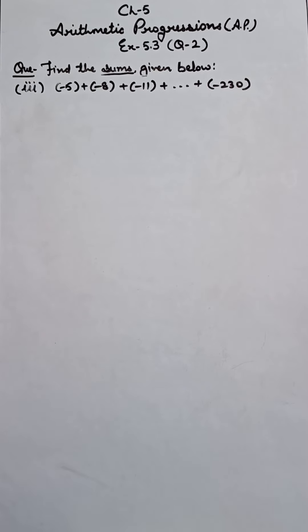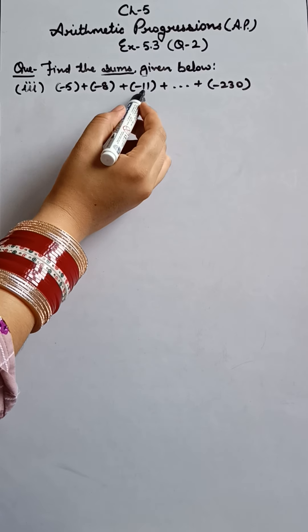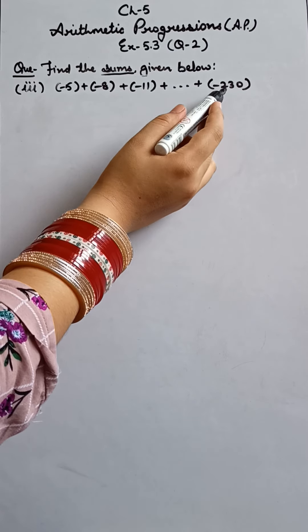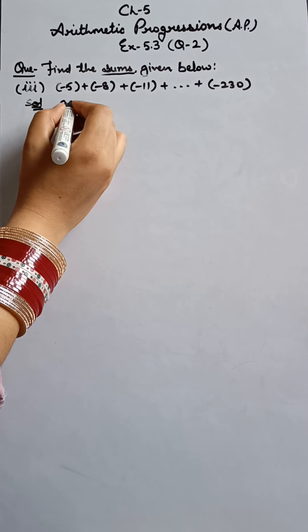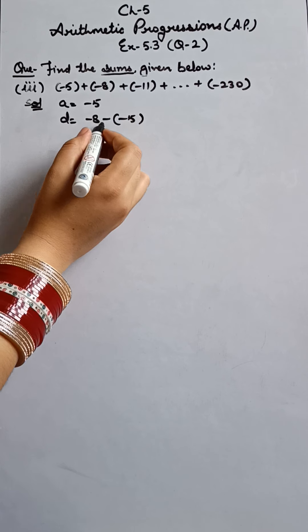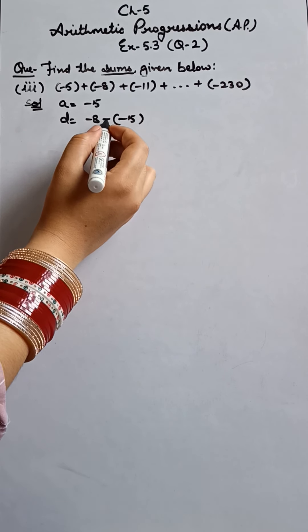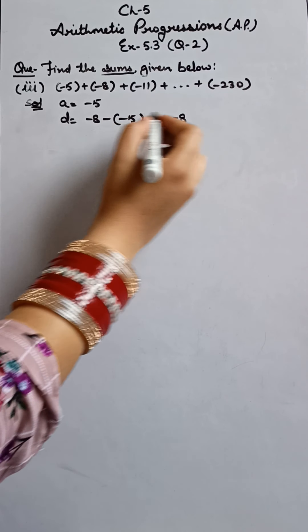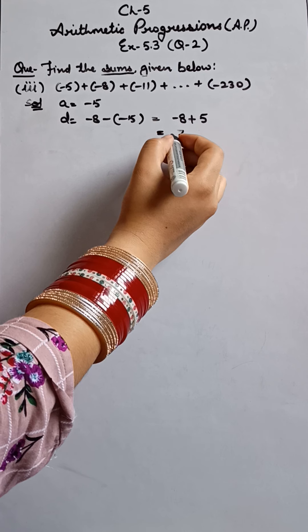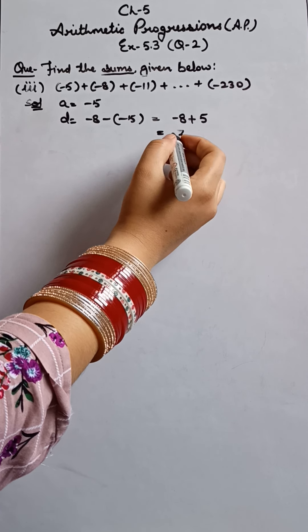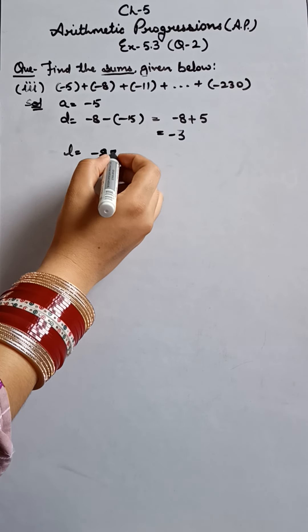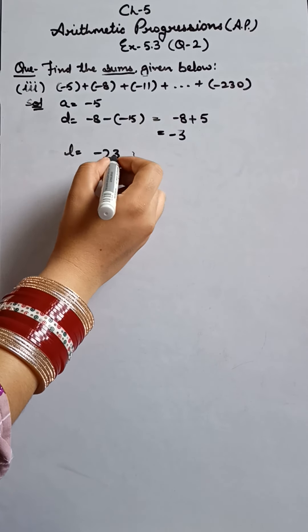So this is the third part. This is minus 5 plus minus 8 plus minus 11 plus and so on, minus 230. So same as it is, this is our very first term, second term, third term, and this is the last term. So mention here in the solution. What is our first term here? Minus 5. And common difference, second term minus first term. Don't get confused in the negative. One minus is in our criteria and one minus is with our term. Minus 8, this minus becomes plus, plus 5. So when we solve, plus minus, minus 8 minus 5 is 3. Sign is of the negative term. Okay? Next, 230 is the last term. Minus 230. So here. Okay?